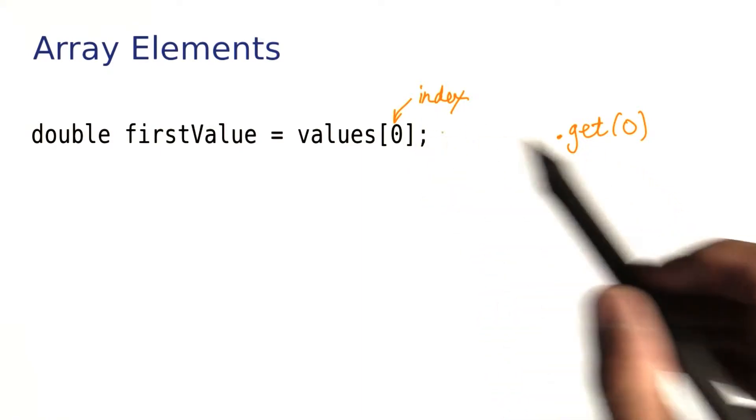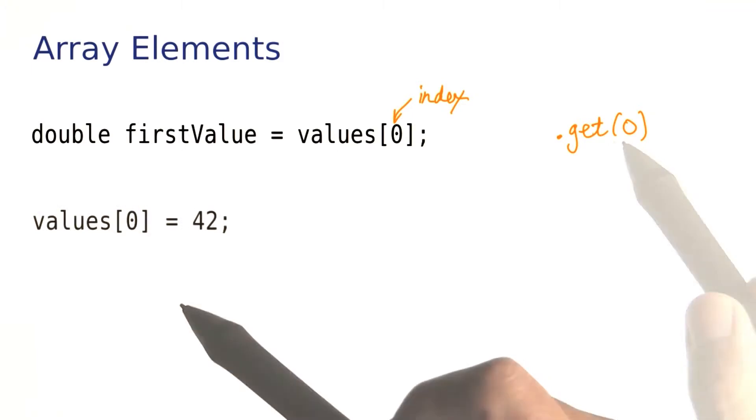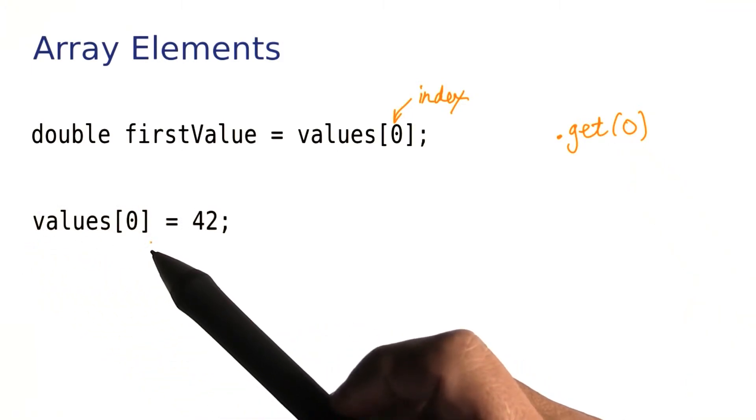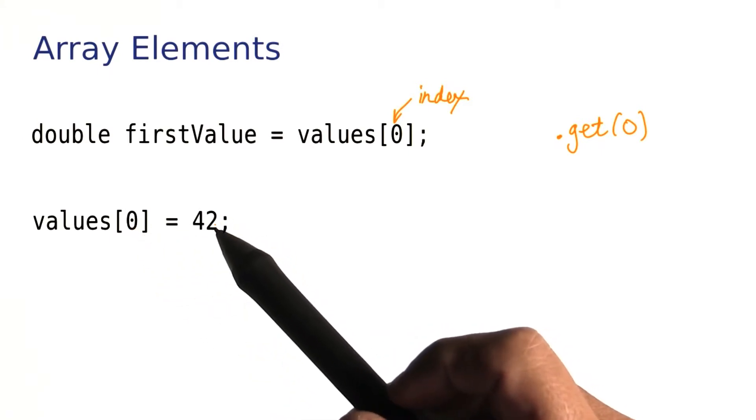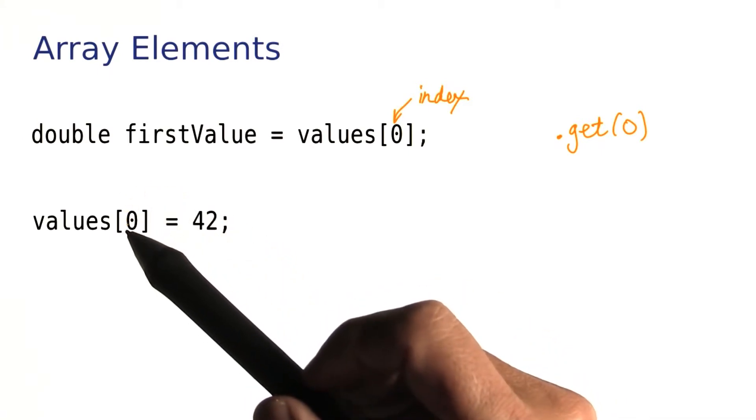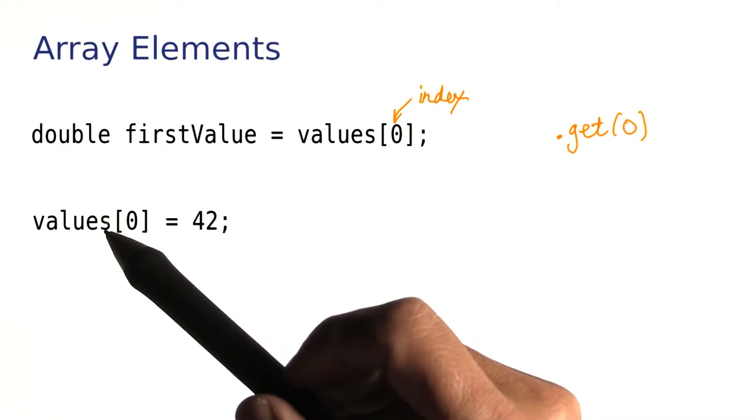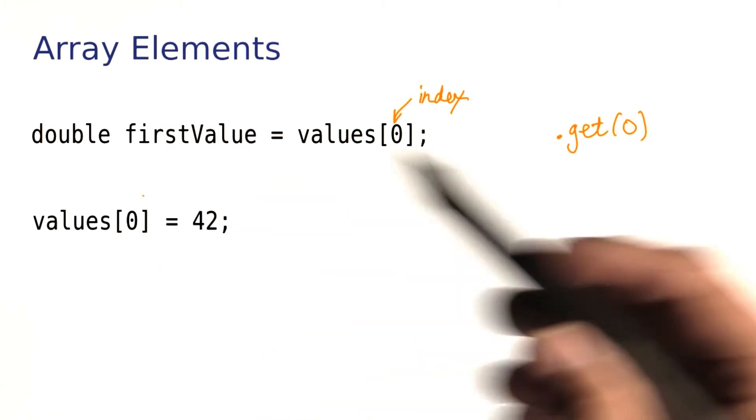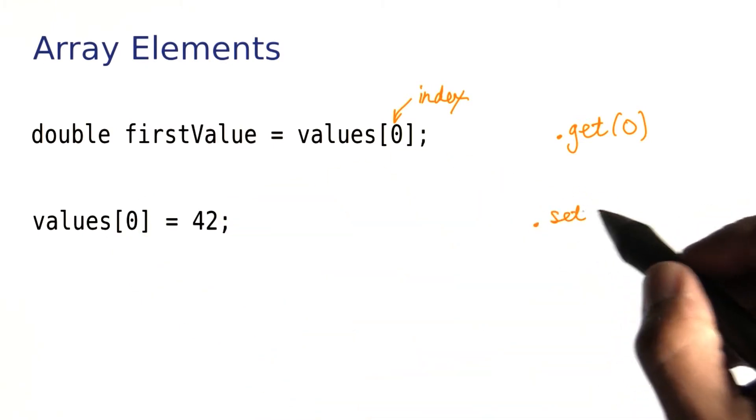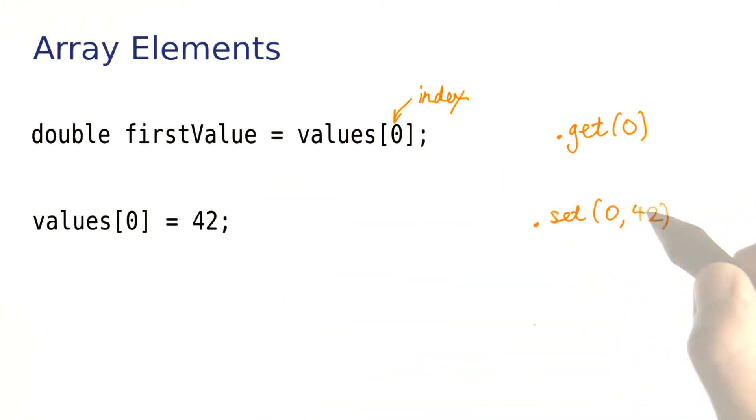For an array, you use the brackets. For an array list, you use a method. You use the same notation if you want to store something into an array. So here values bracket zero equals 42 means put the number 42 into the zero slot of this array. That's a little simpler than with array lists, where we would have had to call dot set of 0, 42.